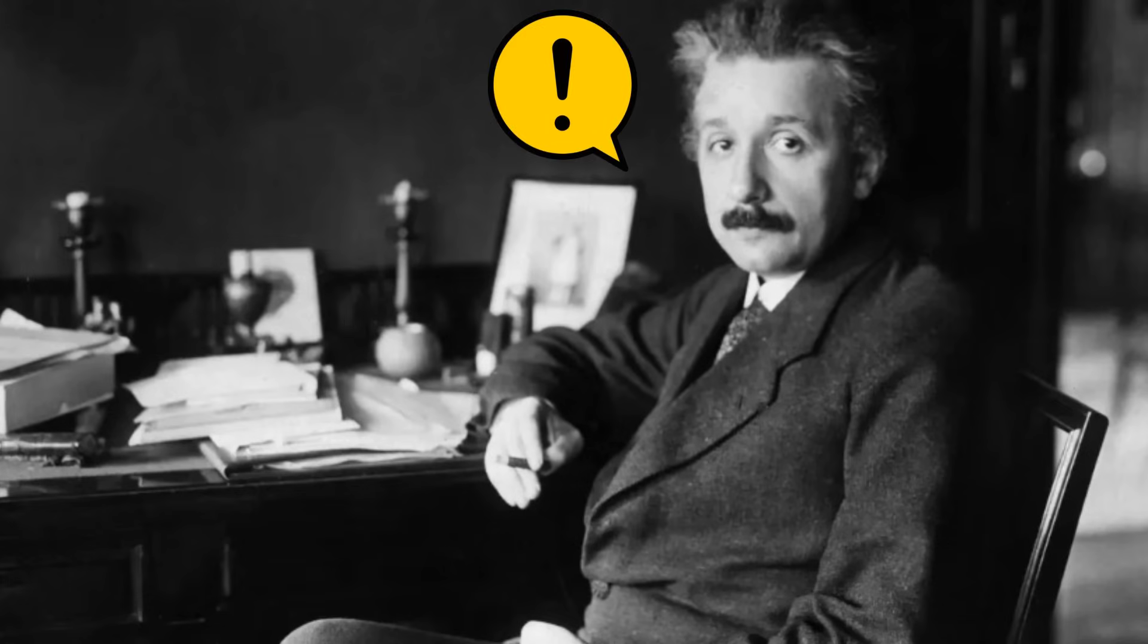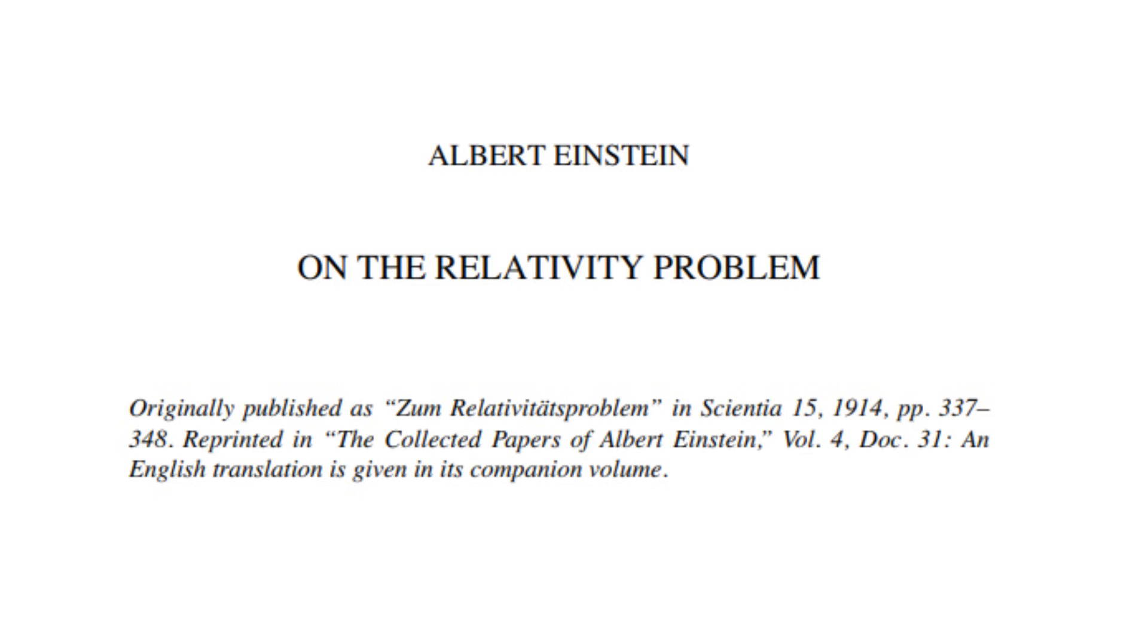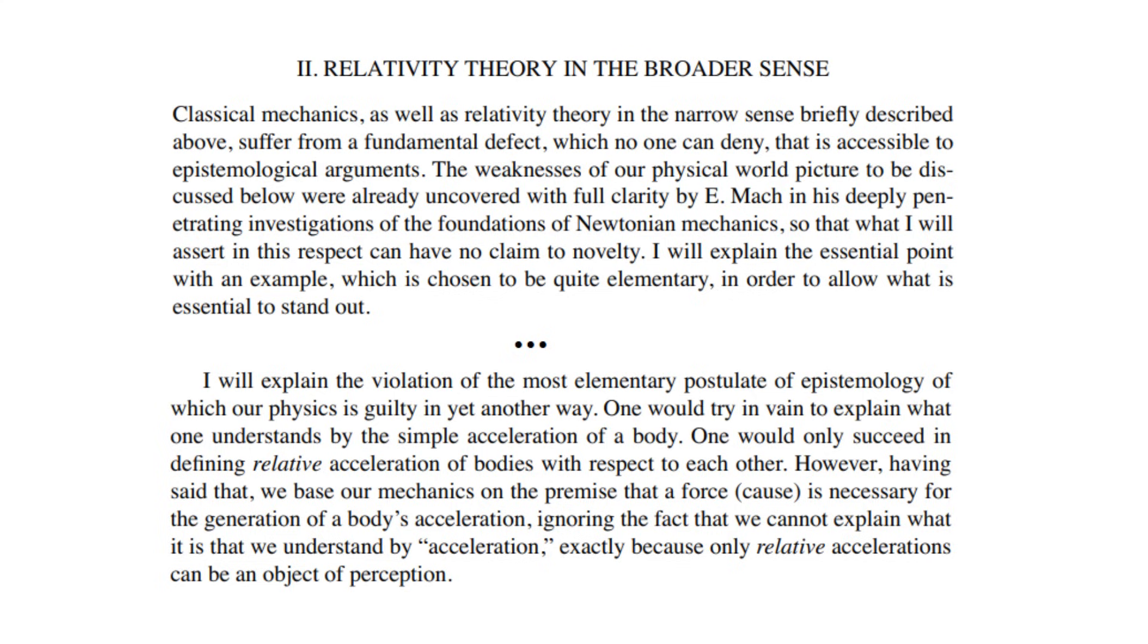But the genius of Einstein also left a hint on the problem of this theory the same way Newton did in his 1914 paper on the relativity problem. He stated that classical mechanics, as well as relativity theory in the narrow sense briefly described above, suffer from fundamental defect, which no one can deny, that is accessible to epistemological arguments.